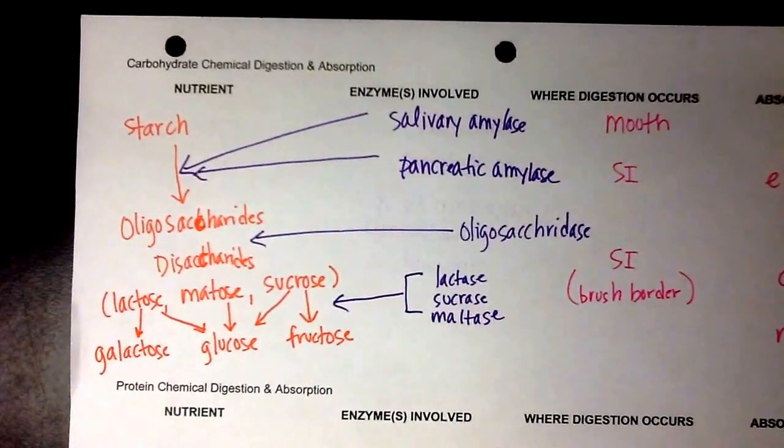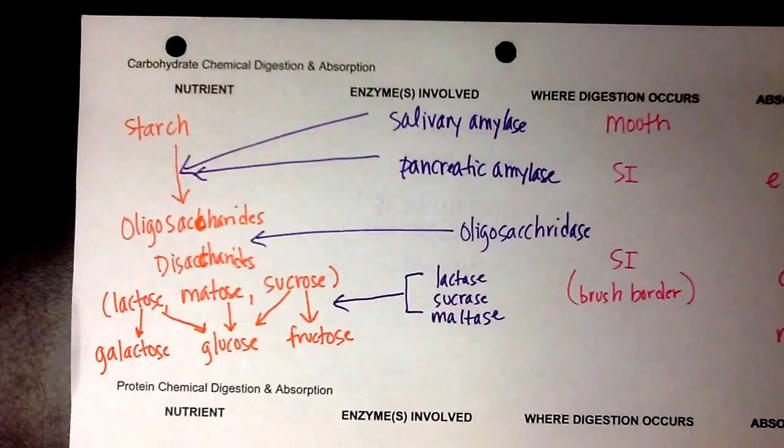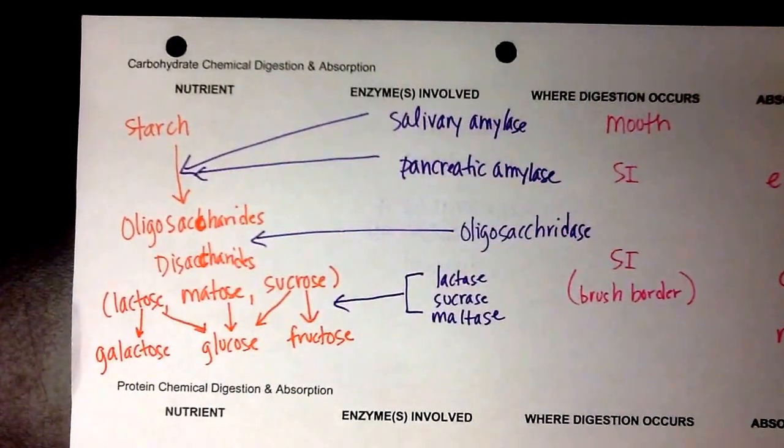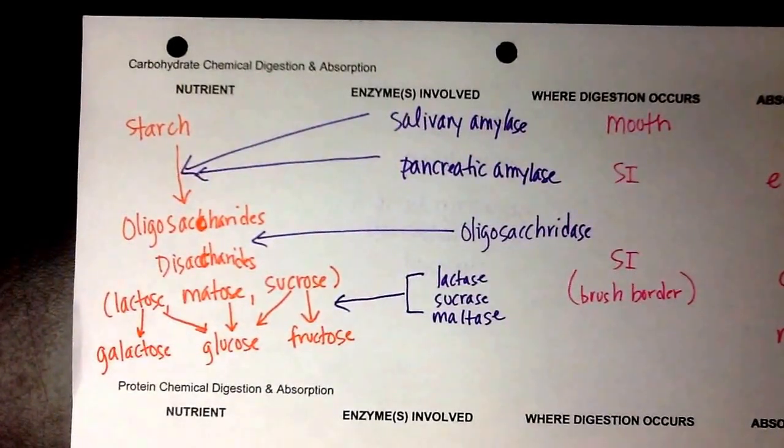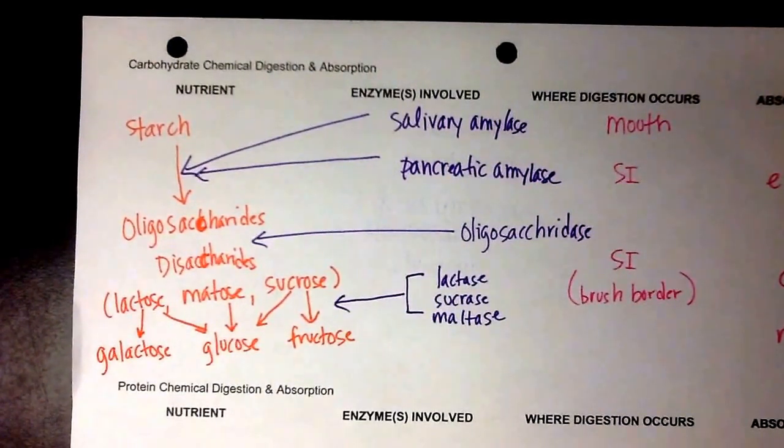And then in the purple, the next thing that I showed you is that salivary amylase and pancreatic amylase are the enzymes that break starch down into smaller, the oligosaccharides. And then the oligosaccharidase is what breaks down the oligosaccharides into disaccharides. And then lactase, sucrase, and maltase break the disaccharides down into monosaccharides.